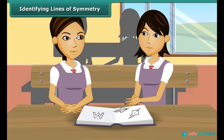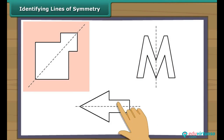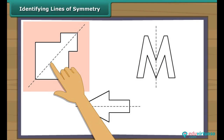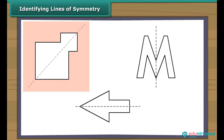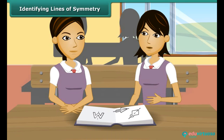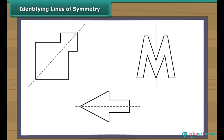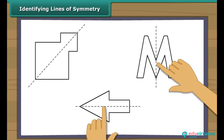Priya, can you now identify the line of symmetry in these designs? I will try. In this figure, this is the line of symmetry, or axis of symmetry. How? When we fold this design this way, the two parts so formed will coincide. So this is the line of symmetry. Good, you have learnt now. And in these figures, these are the lines of symmetry.